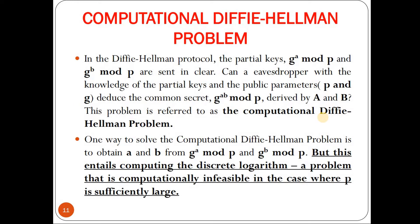In the Diffie-Hellman protocol, partial keys G^a mod P and G^b mod P are sent in clear text. An eavesdropper knowing the partial keys and public parameters P and G cannot easily deduce the secret key G^ab mod P — this is the computational Diffie-Hellman problem. Solving it requires computing discrete logarithm, which is computationally infeasible when P is sufficiently large.